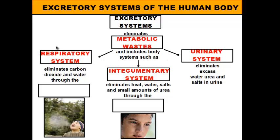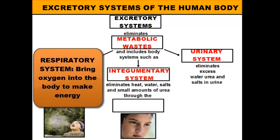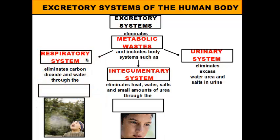In the respiratory system, it is designed to draw oxygen into the body so it can go into the blood, get to the cells, go to the mitochondria, and be used for cell respiration to make ATP energy. But cell respiration is actually going to produce two waste products: carbon dioxide and water. So when we produce them, we have to get them out, and the organ we use is the lungs. Anytime we exhale or breathe out, we're getting rid of metabolic wastes.